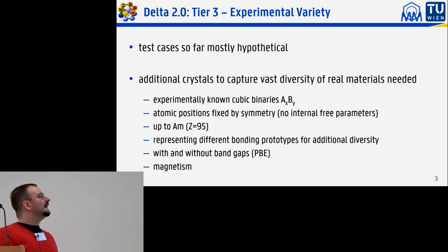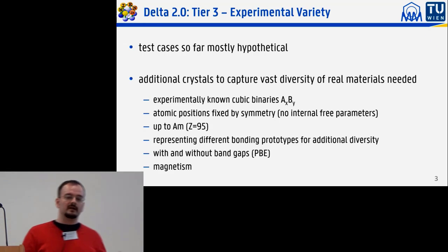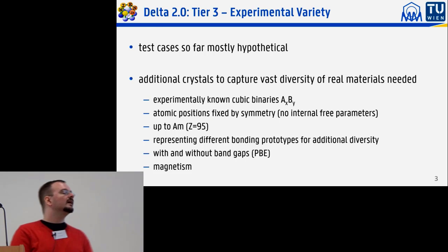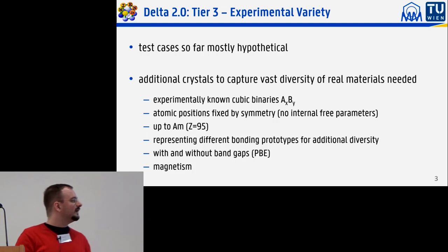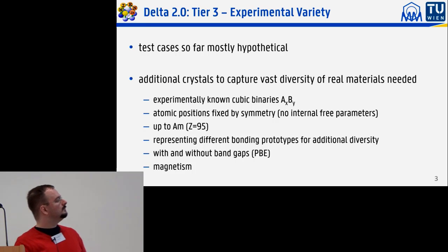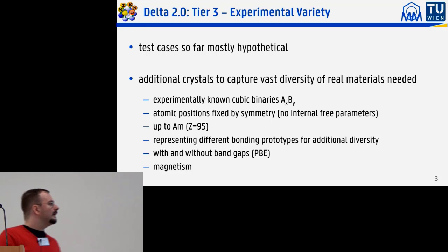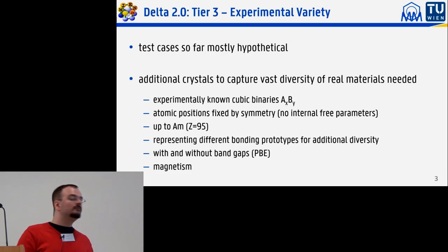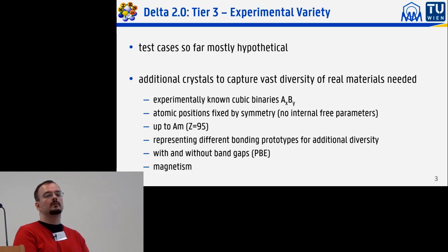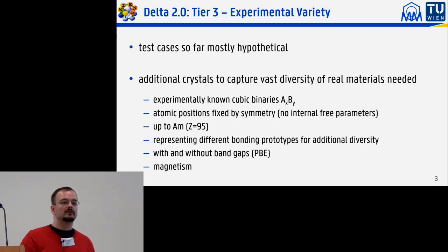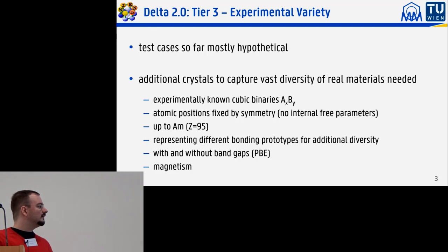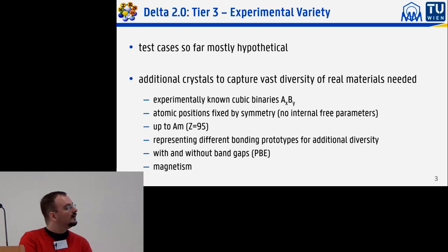We need more realistic test cases to capture the vast diversity of real materials under research. We want those test cases to be cubic with no internal free parameters, up to nuclear number 95 (americium), and to represent different bonding types. Additionally, if magnetism can be realized without supercells, we will include magnetic structures too.